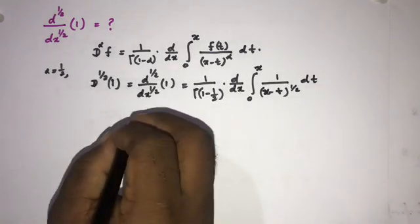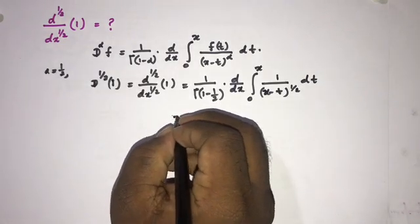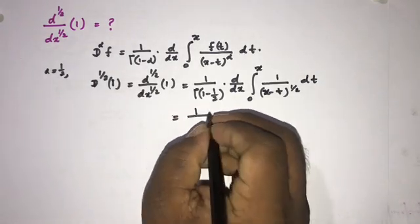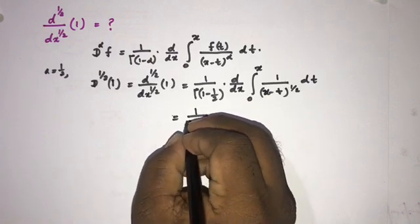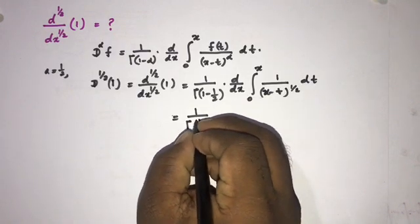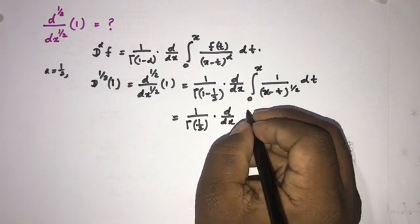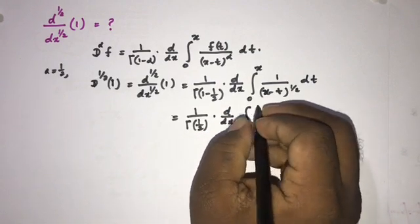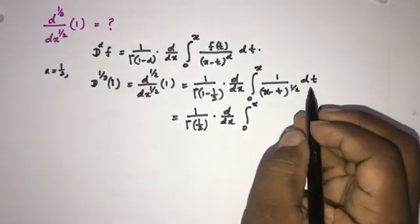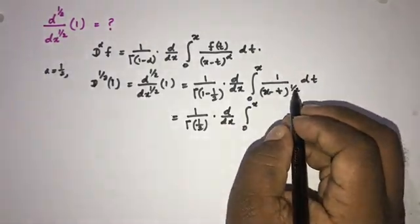Then we can simplify. This is equal to 1 over 1 minus 1 half, so gamma of 1 half, d by dx, and integral from 0 to x. We know integral of 1 now x minus t to the